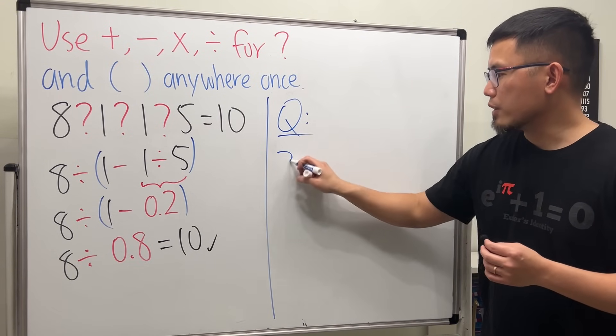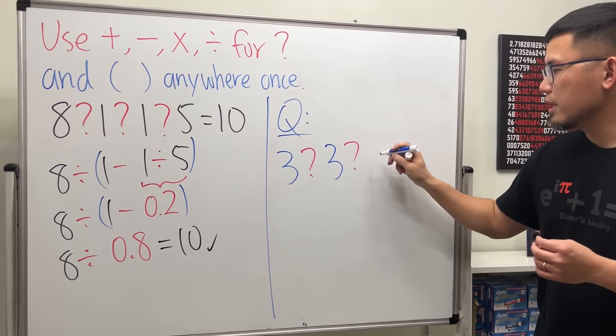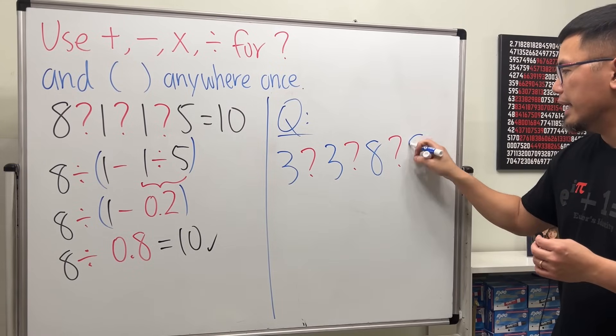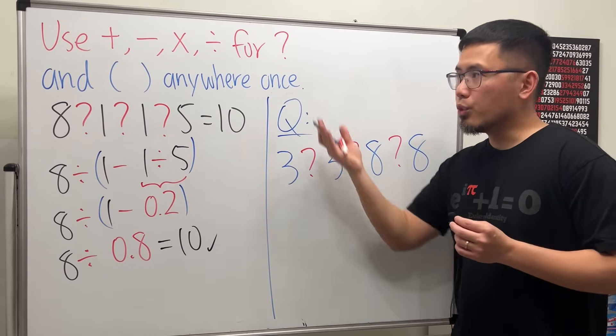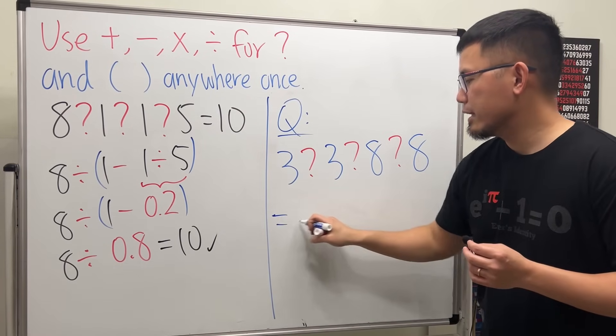So here's the question for you guys. How can we go from 3 question mark, 3 question mark, 8 question mark, and then 8, following the same rule from there, and make 24.